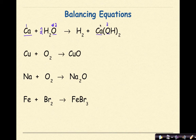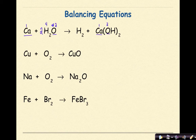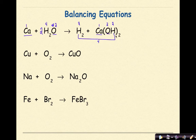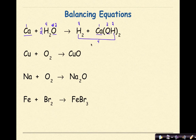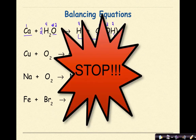The last thing I need to do is balance the hydrogens. 2 times 2 gives me 4 hydrogens on the reactant side. On the product side, I have 2 hydrogens in H2 and 2 hydrogens from the Ca(OH)2 because the 2 distributes through — a total of 4 hydrogens. Checking: 1 Ca, 1 Ca; 4 hydrogens, 4 hydrogens; 2 oxygens, 2 oxygens — this is balanced. Now stop, balance the next 3 equations, and then check your work.